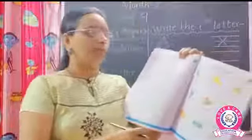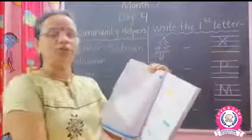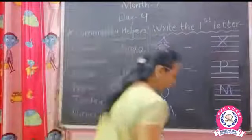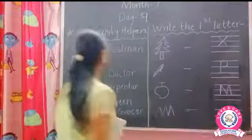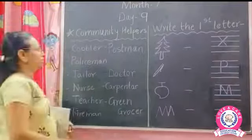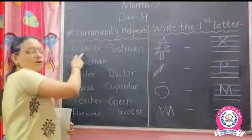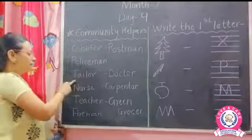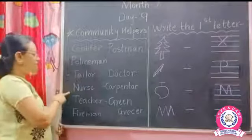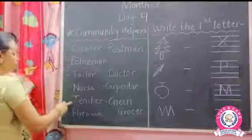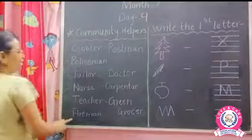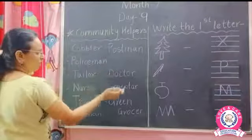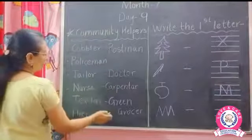So please write A to Z. Now look at the board — revise the community helpers: cobbler, policeman, tailor, nurse, teacher, fireman, postman, doctor, carpenter, and green grocer.